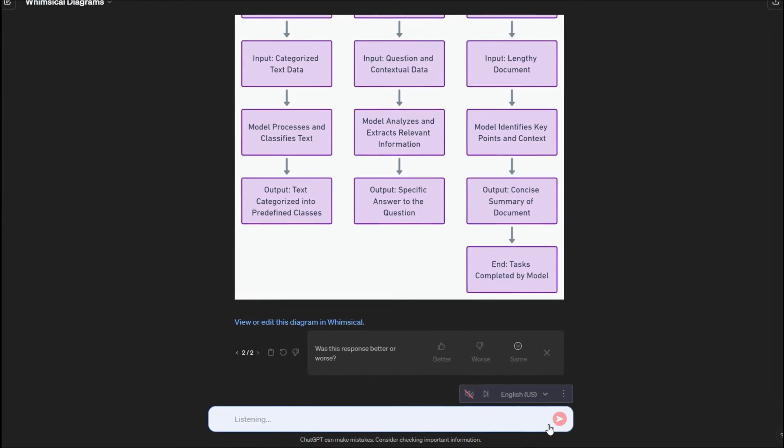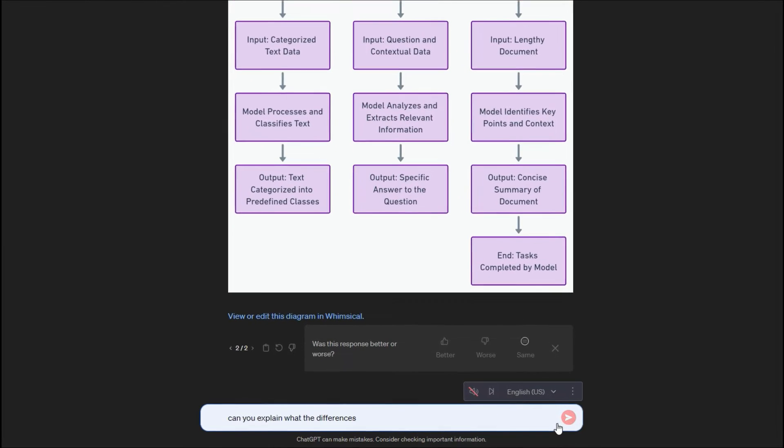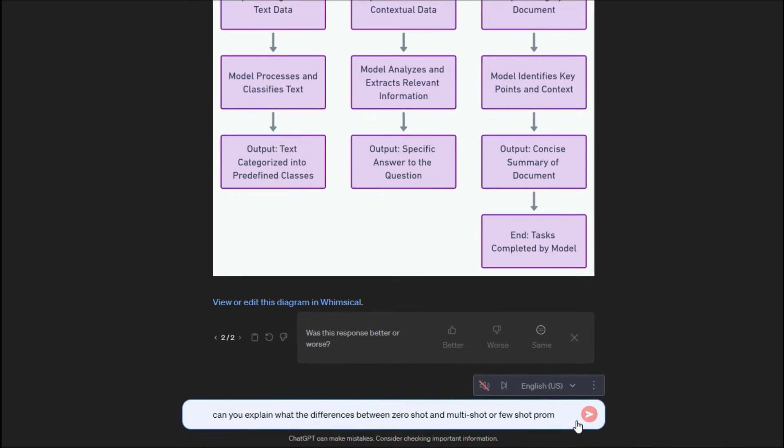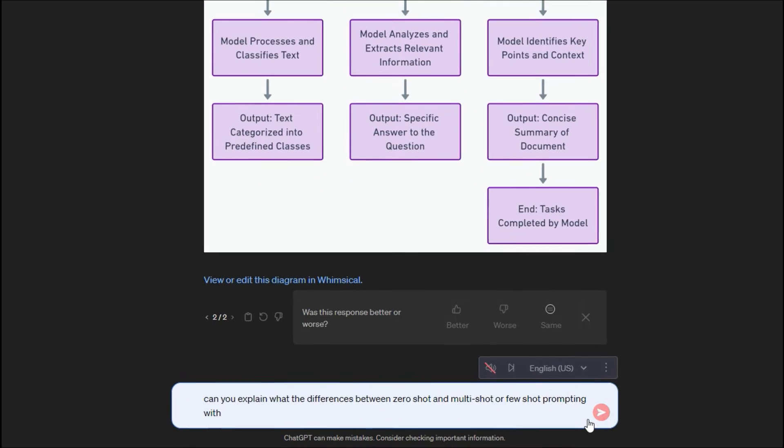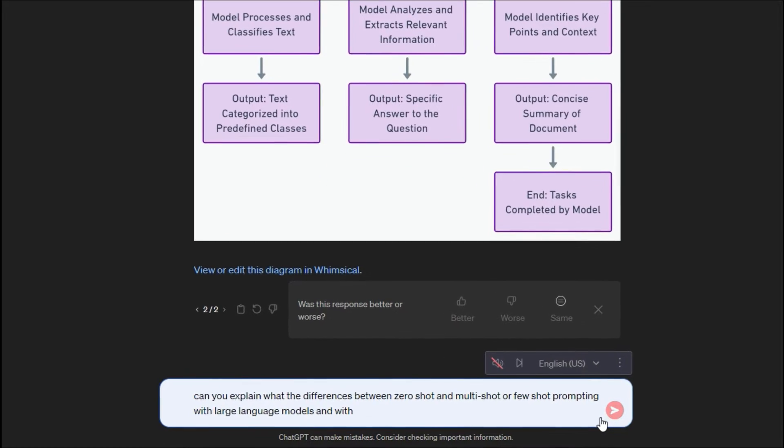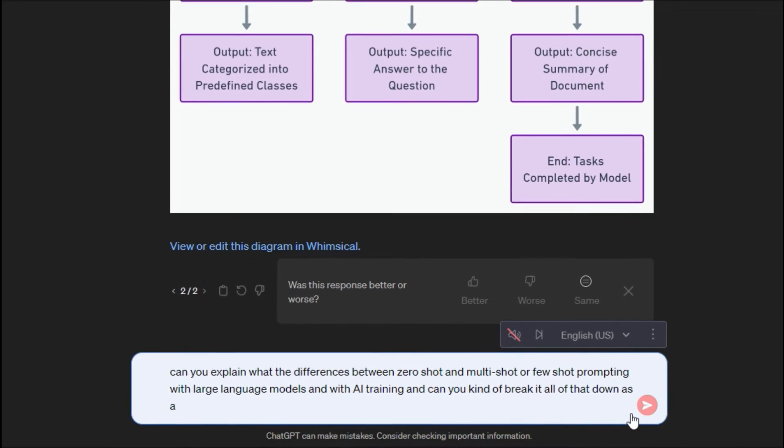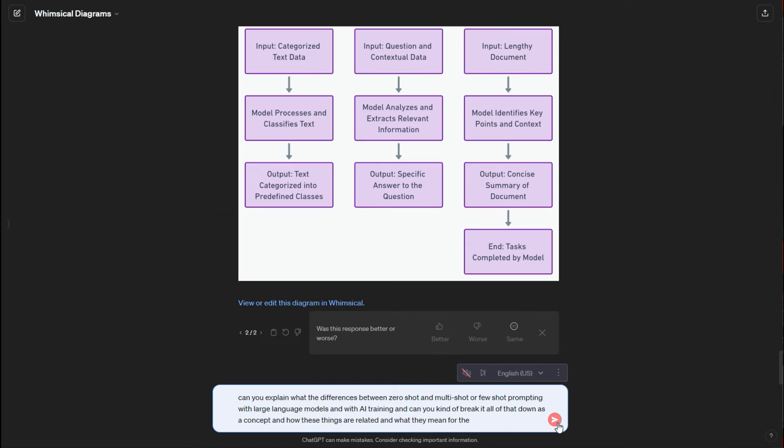I'm going to work on getting an answer to a question that I have. I'm going to ask, can you explain what the difference is between zero shot and multi shot or few shot prompting with large language models and with AI training? Can you break all of that down as a concept and how these things are related and what they mean for the end user?